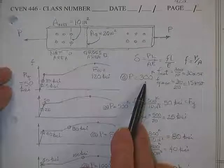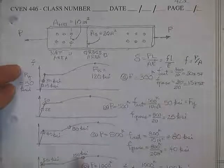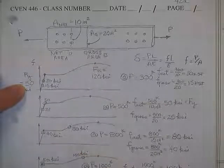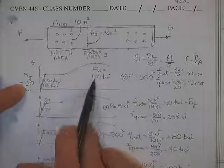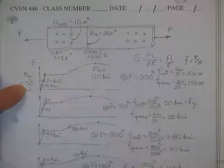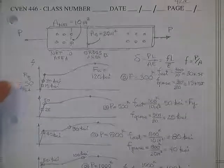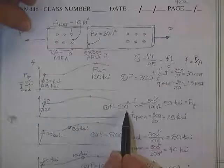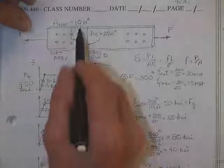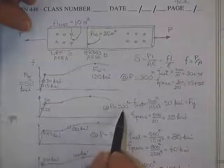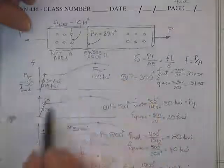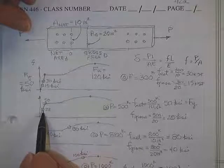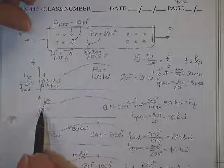That's with 300 kips of load applied. In this particular plate, F_y is 50 ksi. You haven't reached that yet. And the ultimate is 120 ksi. I'm just picking numbers out of the air. Then once you put 500 kips of load on there, you divide 500 by 10, and you get 50. You divide 500 by 20, and you get 25. Here's the stress levels at the holes. Here's the stress level in the main plate.